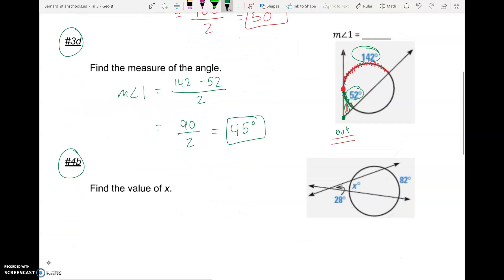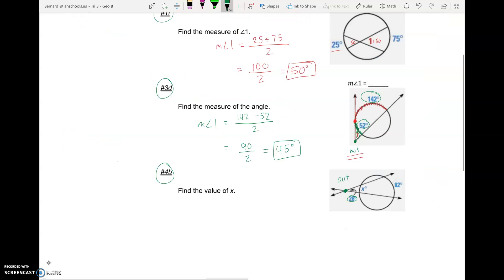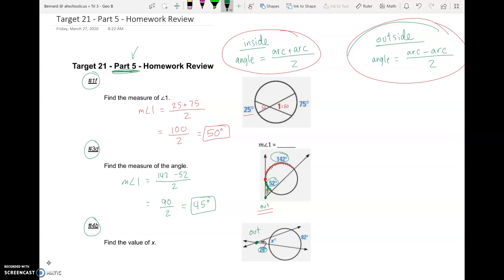Now, as you can see in problem 4B, we know this angle, 28 degrees, and where those two lines intersect is on the outside. So again, we're going to work with an angle on the outside. And so it's going to be our angle equals arc minus arc divided by 2.